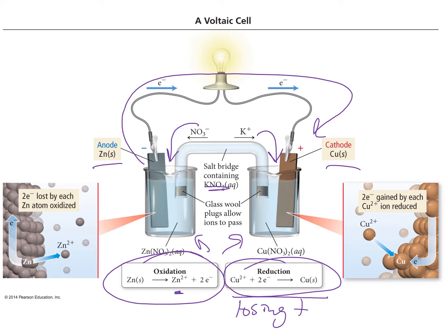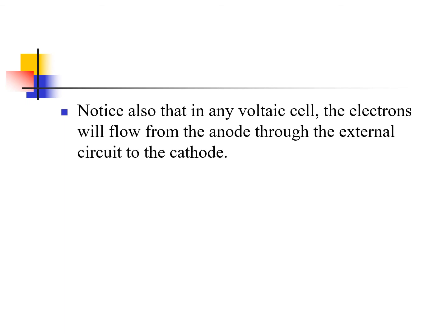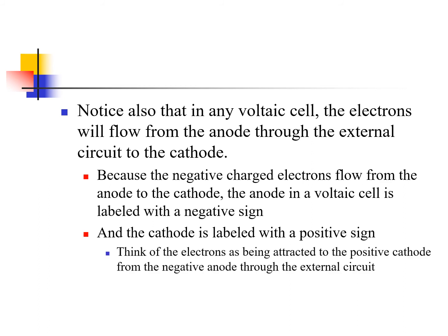If you've ever seen a battery, they have a positive and a negative end. The negative end is where the electrons are coming from; the positive end is where the electrons are moving towards. In any voltaic cell, electrons flow from the anode through the external circuit to the cathode. We label the anode with a negative sign and the cathode with a positive sign. The electrons are attracted to the positive cathode and repelled from the negative anode.